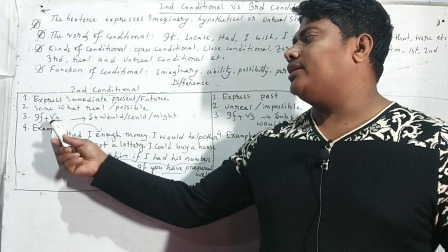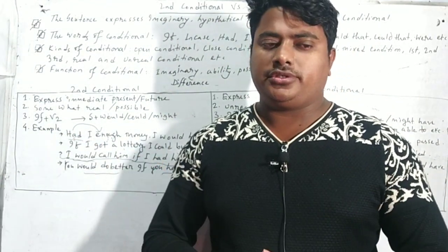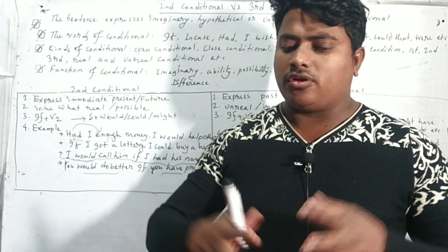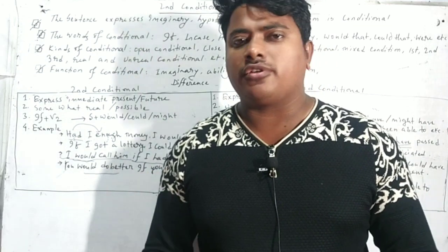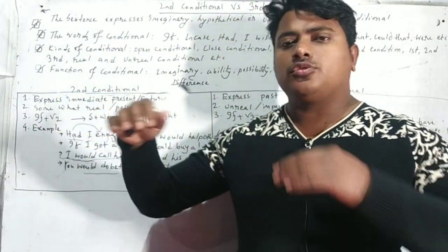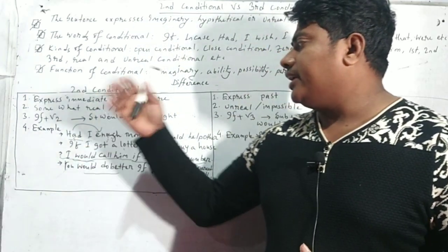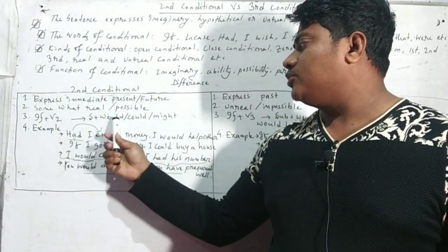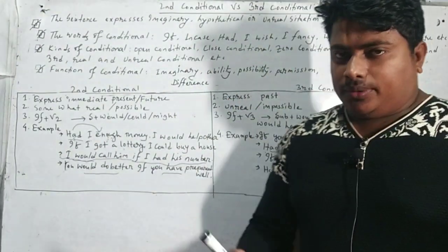Then the structure of second conditional. In second conditional we find two clauses. One is dependent clause or another is independent clause. Dependent clause is the 'if' clause. If clause always uses past tense, then the latter part of sentence will be subject + would, could, or might. Any one we can use.